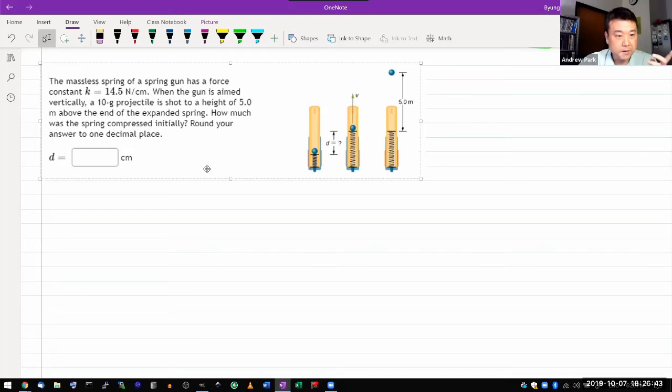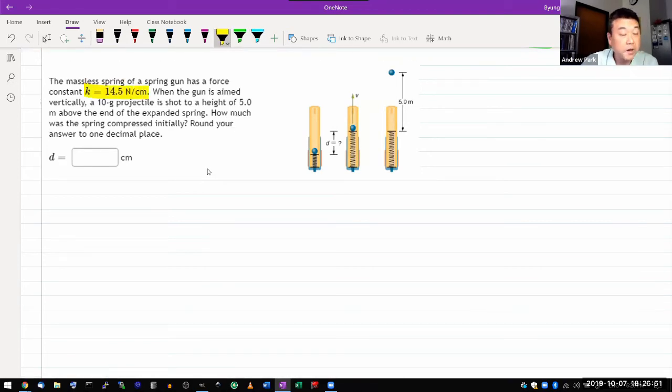So the question says, the massless spring of a spring gun has a force constant k. So I'm given the spring constant, which is good, in Newton per centimeter, but I'll have you deal with it when you plug in numbers.